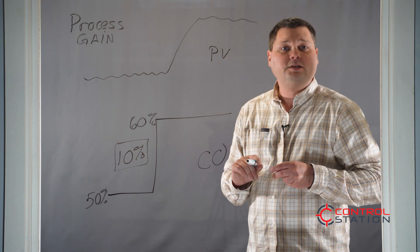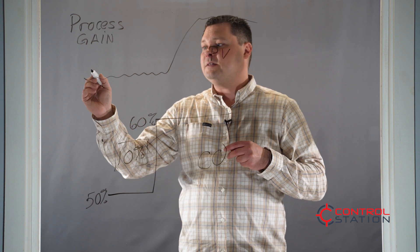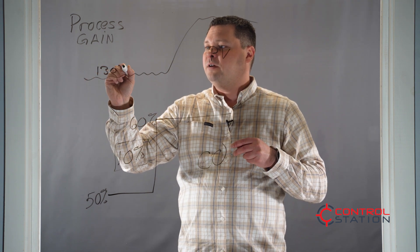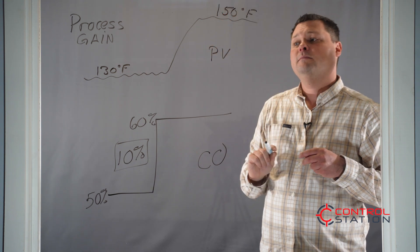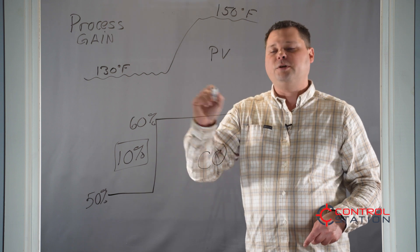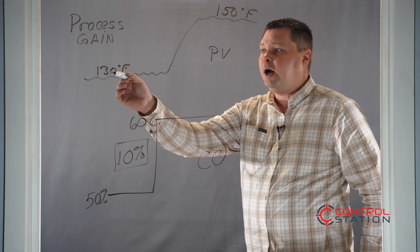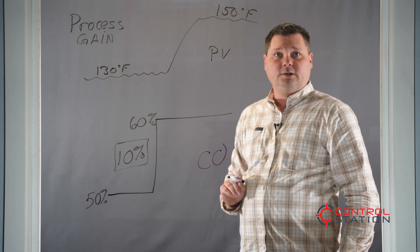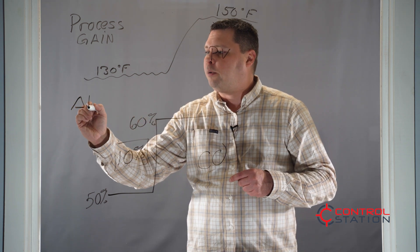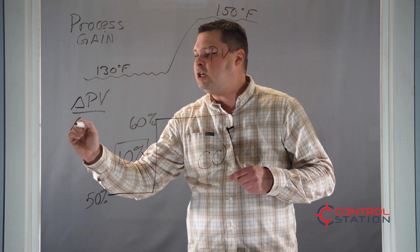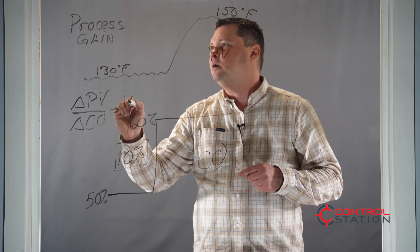How far did the process variable move? For that we're going to need to measure the process variable. In this case let's say we went from 130 degrees Fahrenheit to 150 degrees Fahrenheit. So we moved the controller output 10 percent, opened the control valve 10 percent, and our temperature went from 130 to 150 degrees. Our process gain Kp is how far the process variable moved divided by the change in our controller output.